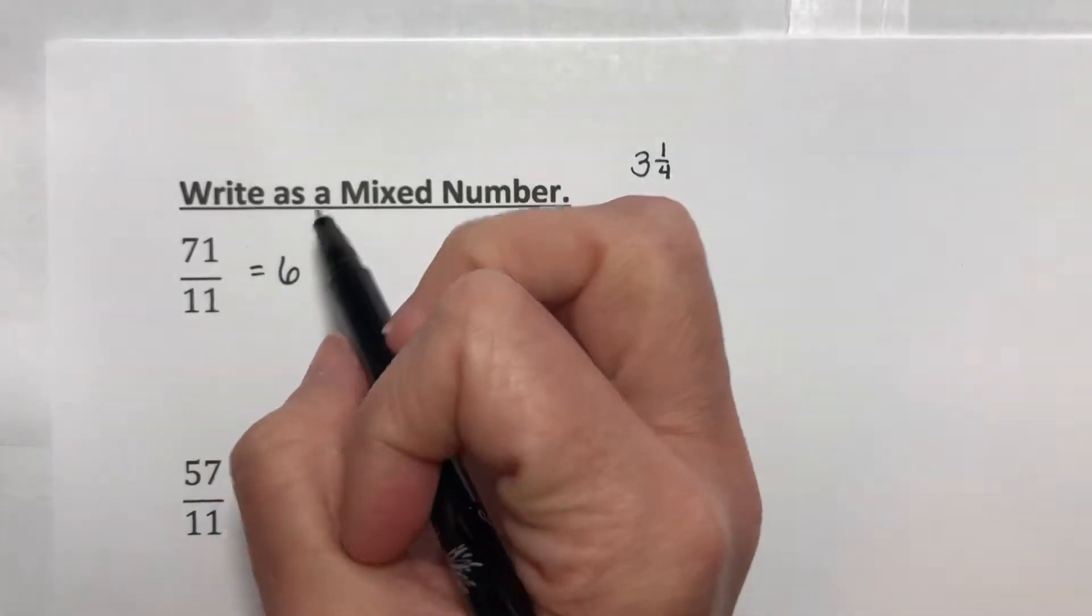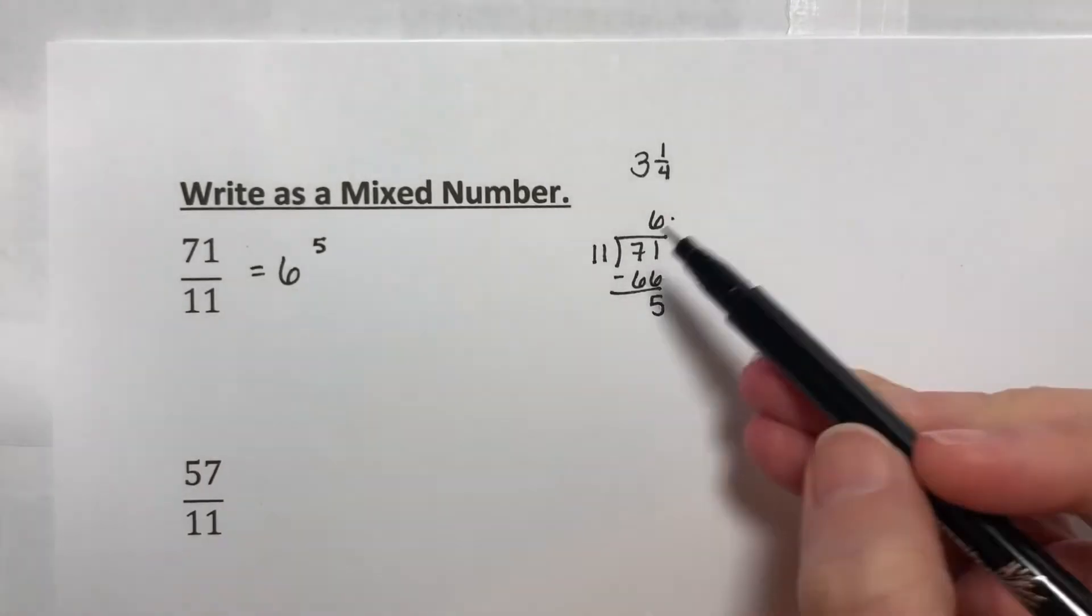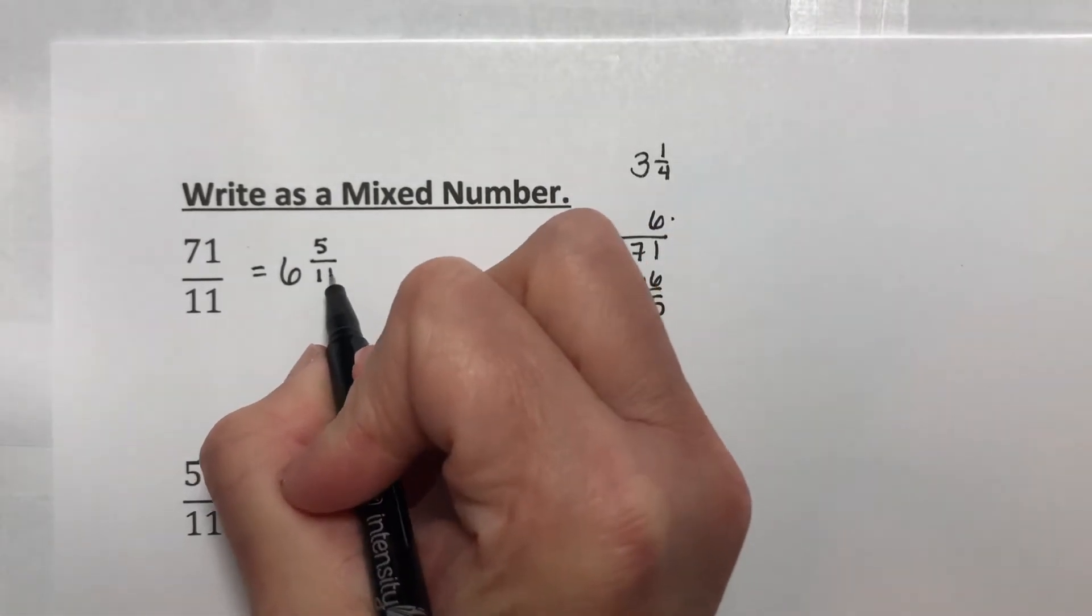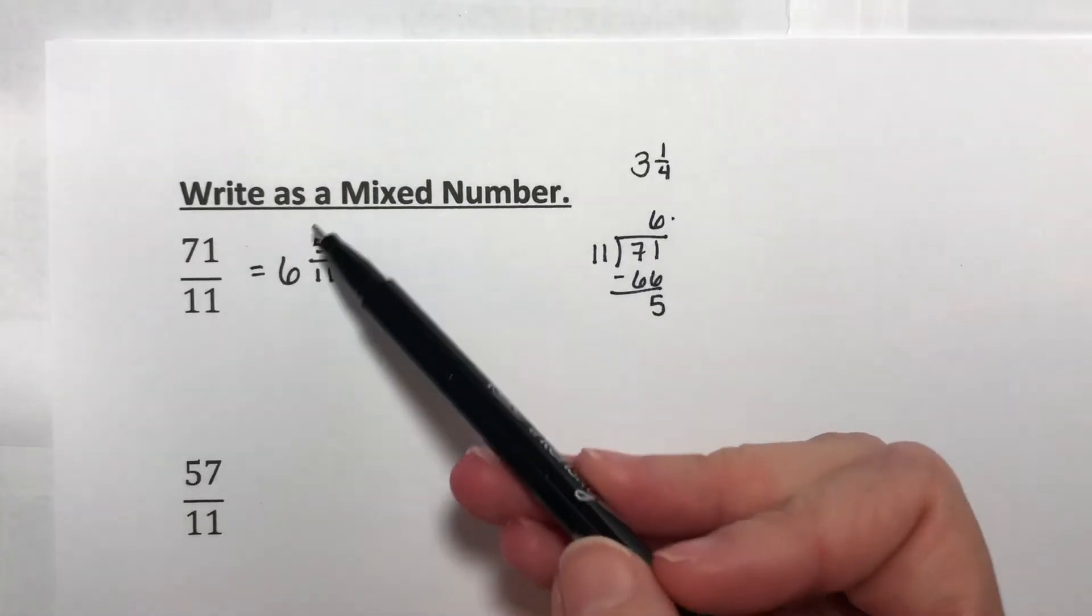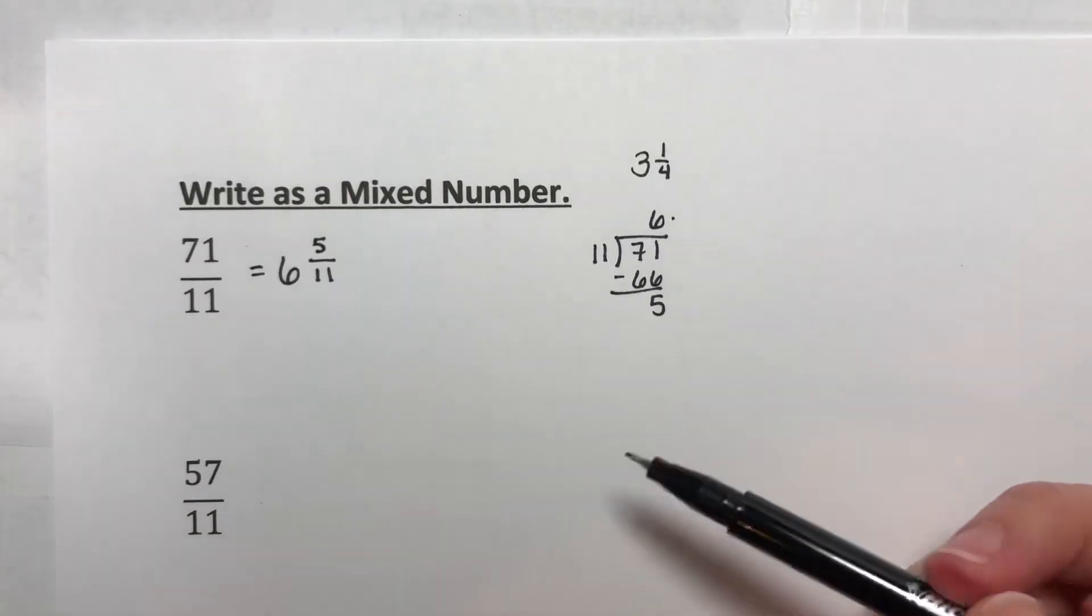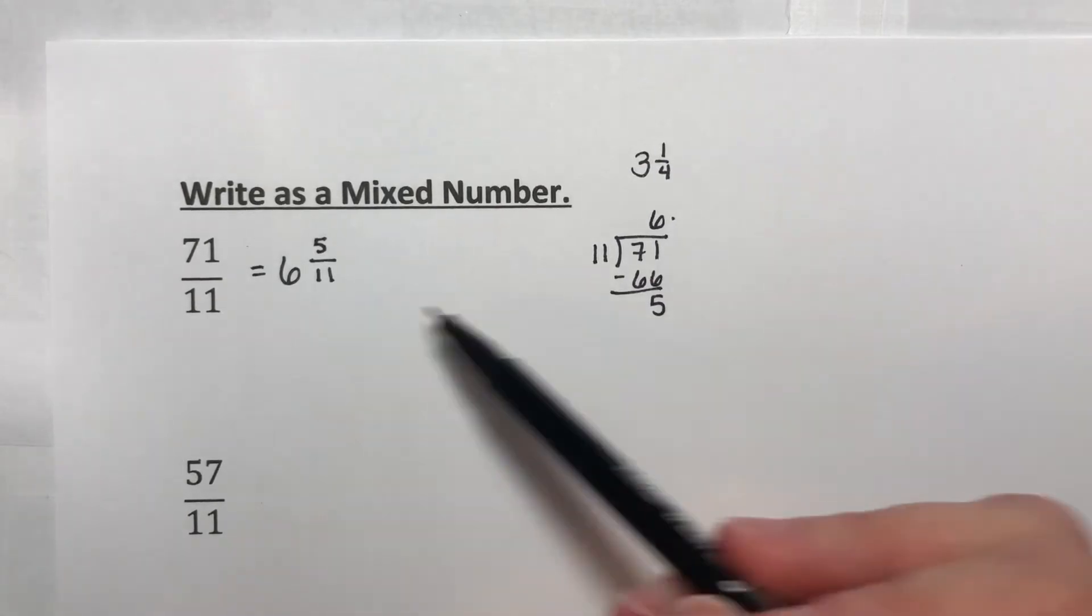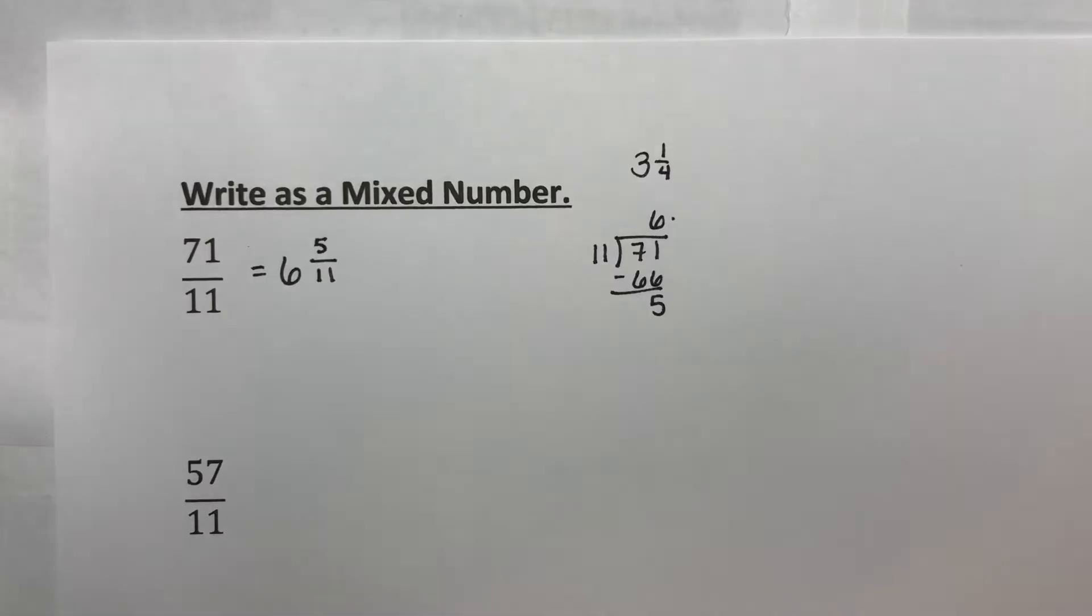You take your remainder, which is 5, and then what you're dividing by goes in the bottom. This denominator is this denominator. Now this should be in lowest terms after you've gotten this done, but this is your answer. This is the same thing as 6 and 5 elevenths.